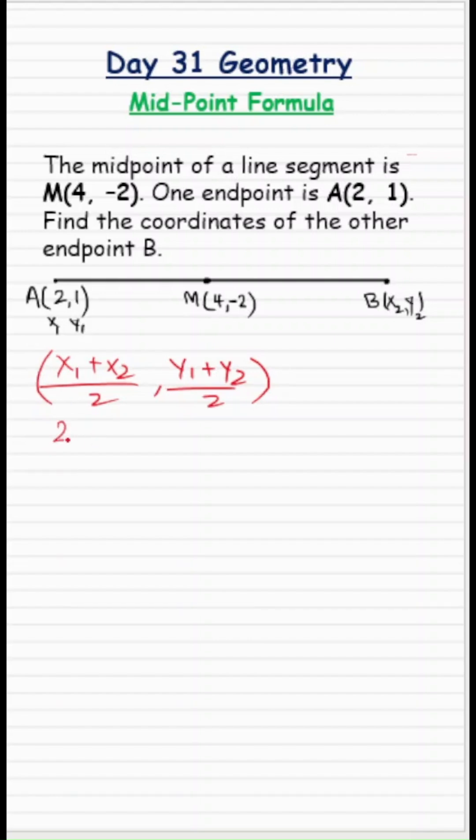Let's plug in the values. We get (2 + x2)/2, (1 + y2)/2. These are the midpoint coordinates, but those midpoint coordinates are already given to us as (4, -2).